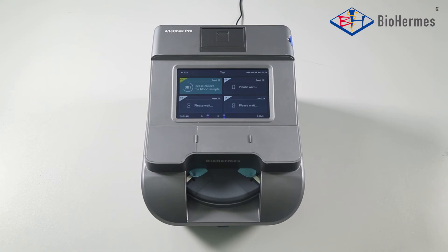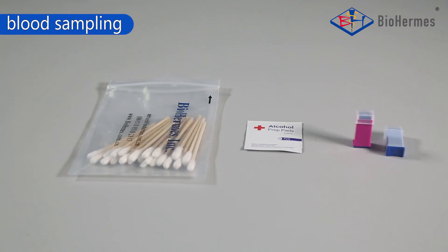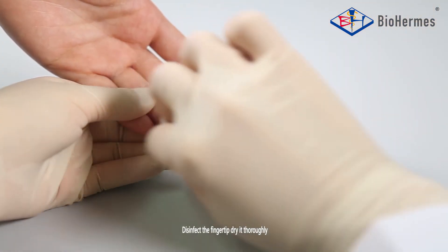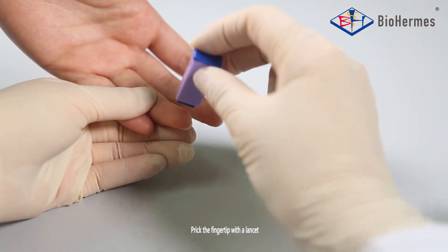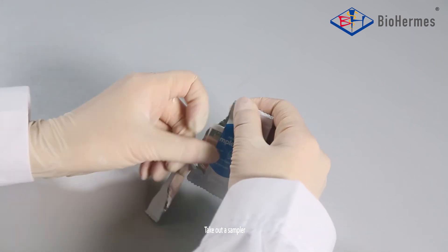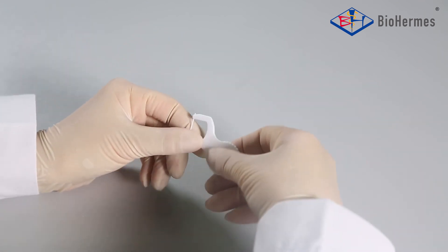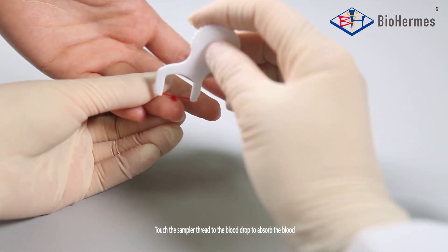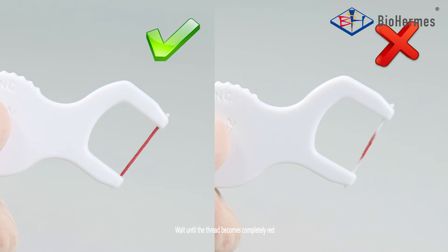Blood sampling: Capillary blood. Besides the glyco-hemoglobin analysis system, cotton swab, alcohol swab, and lancet are also needed. Disinfect the fingertip and dry it thoroughly. Prick the fingertip with the lancet. Take out a sampler. Touch the sampler thread to the blood drop to absorb the blood. Wait until the thread becomes completely red.